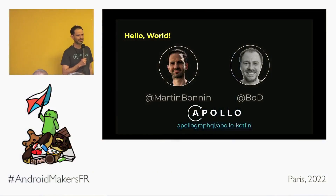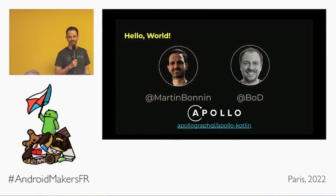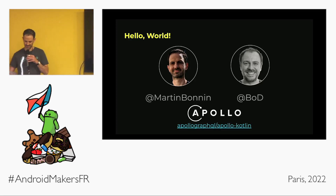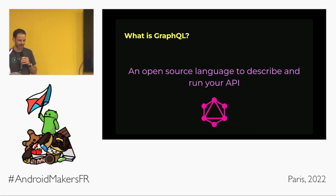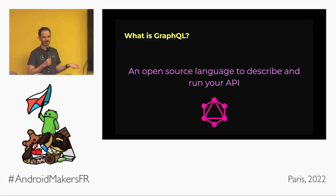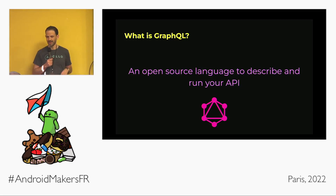We are both working on a project named Apollo Kotlin. Apollo Kotlin is a GraphQL client written 100% in Kotlin. But today we want to talk about GraphQL and caching — caching is one of the main pain points that we have heard developers have with GraphQL.